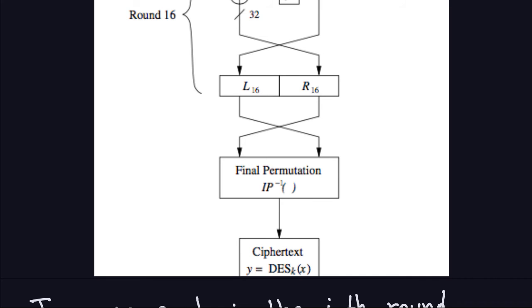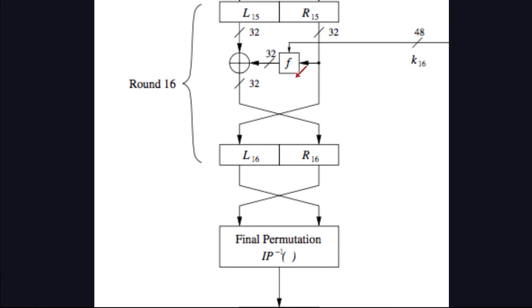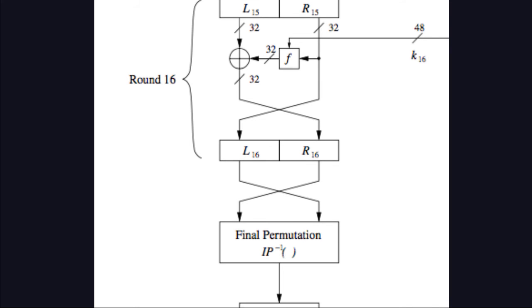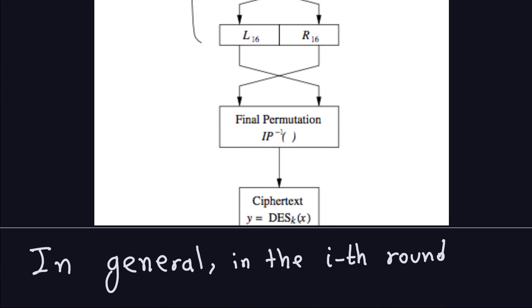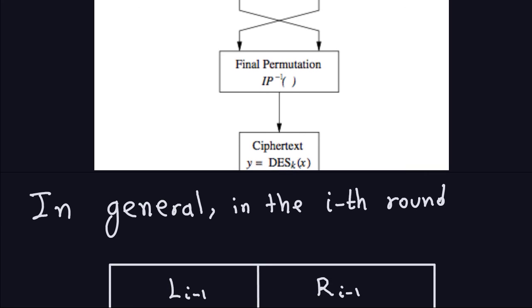We still have some black boxes here. The two remaining black boxes are: what exactly is the F function doing, and how do you get the sub-keys from the actual key — that's the key schedule. Those are the two things we haven't looked at yet, so we're going to zoom into those — the function F and the key schedule: how do we get 16 keys from the one 56-bit key.